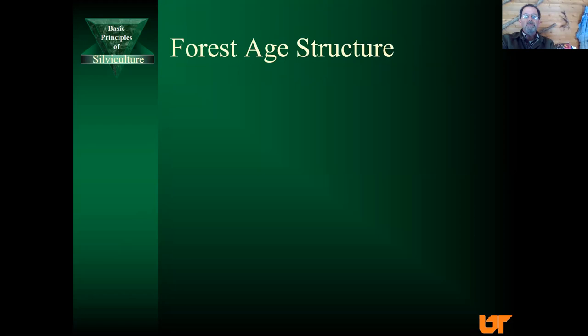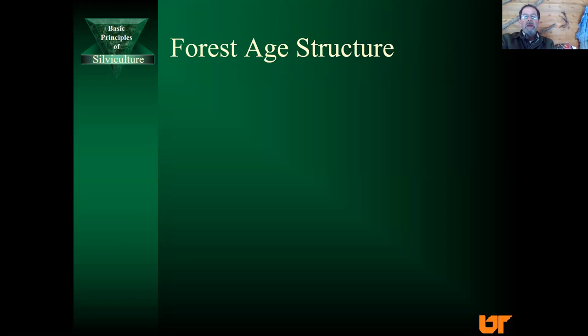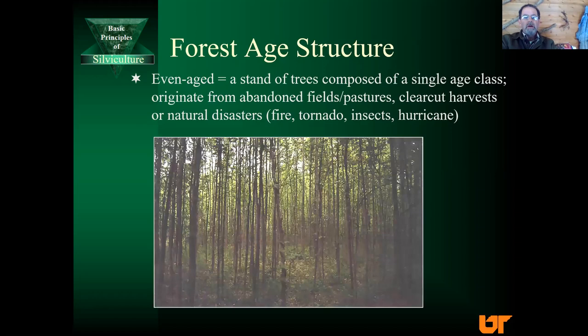A few concepts to understand that will help you through each leg of the silvicultural triangle. One is forest age structure. One example is an even-aged forest — a stand of trees composed of a single age class originating from an abandoned field or pasture, maybe a clear-cut harvest, or even a natural disaster. After a tornado eliminates the trees, it immediately begins drawing back to an even-aged stand. Here's an example of an even-aged stand — just saplings, roughly about eight years old, in a cove of a field that was abandoned. The farmer didn't want to farm this little patch anymore, and immediately the forces of succession took over and it grew back to a young even-aged forest.